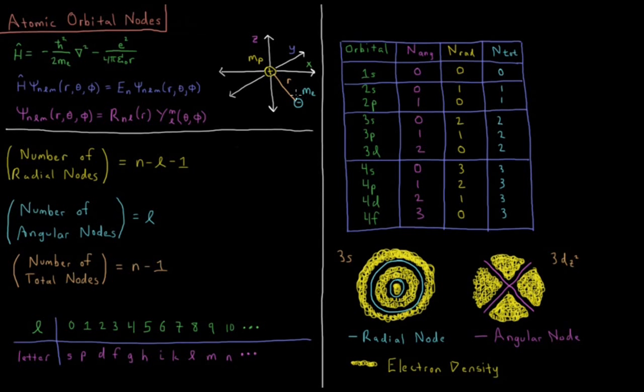Because our potential energy depends on R, we've chosen to express our operators and our wave function in terms of spherical polar coordinates R, theta, and phi.